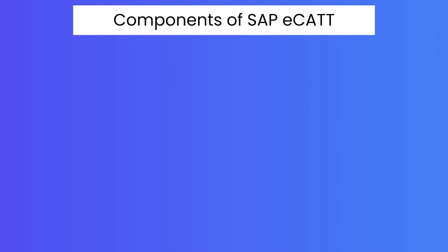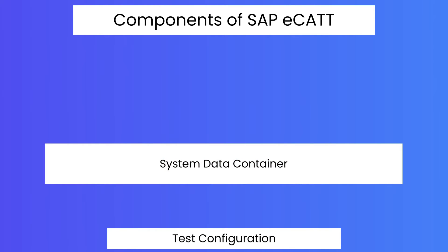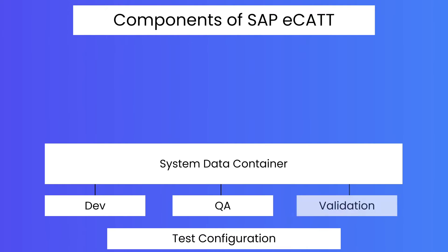What are the components of SAP eCATT? In SAP eCATT we have something called Test Configuration, which holds all of your SAP eCATT testing objects. Then we have the System Data Container. The System Data Container holds information about your SAP systems — for example, it typically contains information about dev systems, quality systems, and validation systems. It provides information about the systems on which the SAP eCATT tests need to be executed.